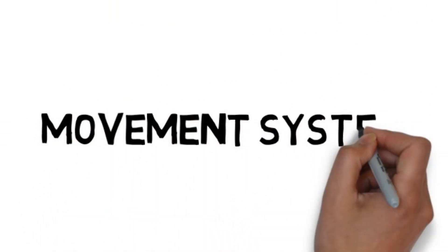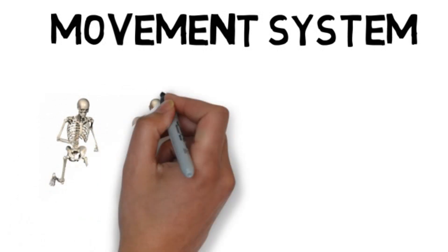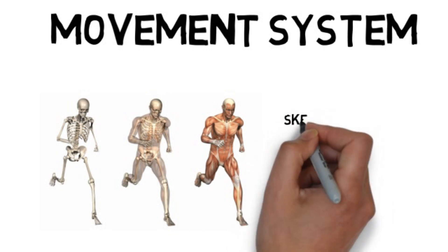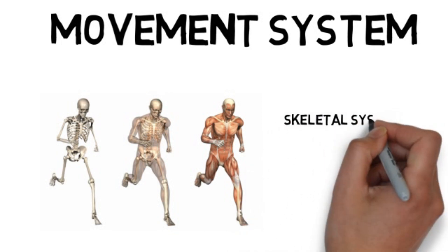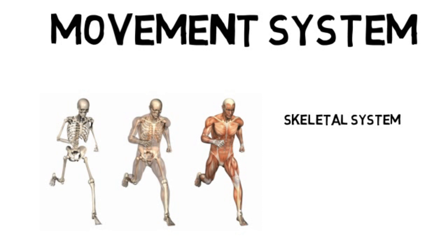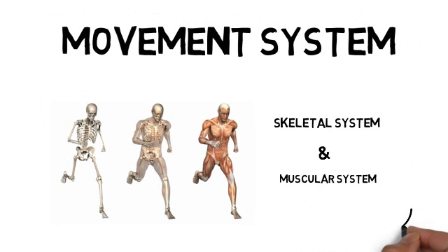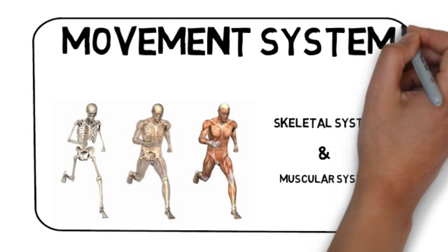Movement system. This system consists of two systems that work together: the skeletal system that consists of the bones, and the muscular system that consists of the muscles. All these two work together to enable us to move.